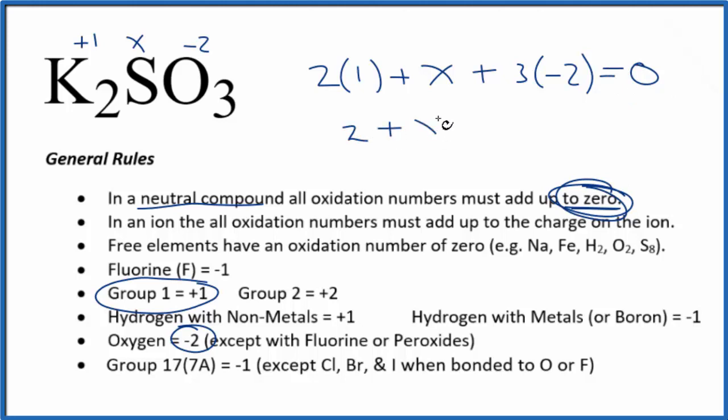So two plus X minus six equals zero. So we have X minus four equals zero. X has to equal four, a positive four.